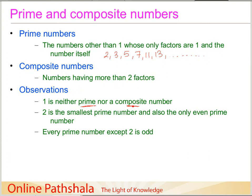A few important observations: the number 1 is neither a prime number nor a composite number. A prime number must have exactly two factors, but 1 has only one factor. And 1 does not have more than two factors, so it fails the composite criterion too. It is also important to know that 2 is the smallest prime number and also the only even prime number. As a consequence, every prime number except 2 is odd — as you can verify with 3, 5, 7, 11, 13, and so on.